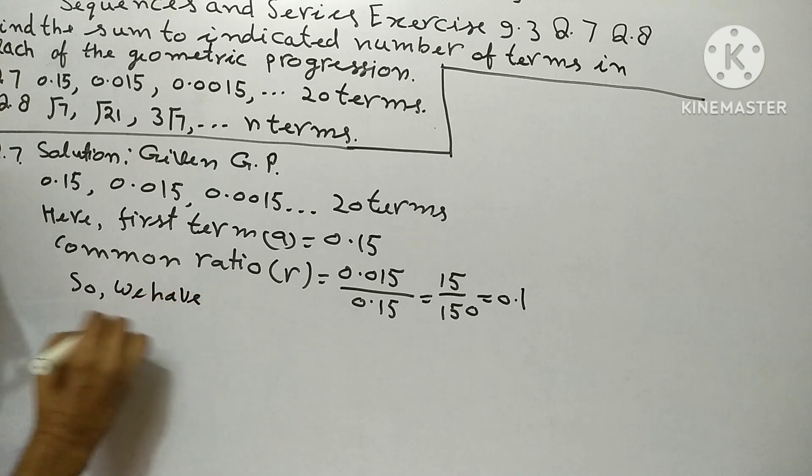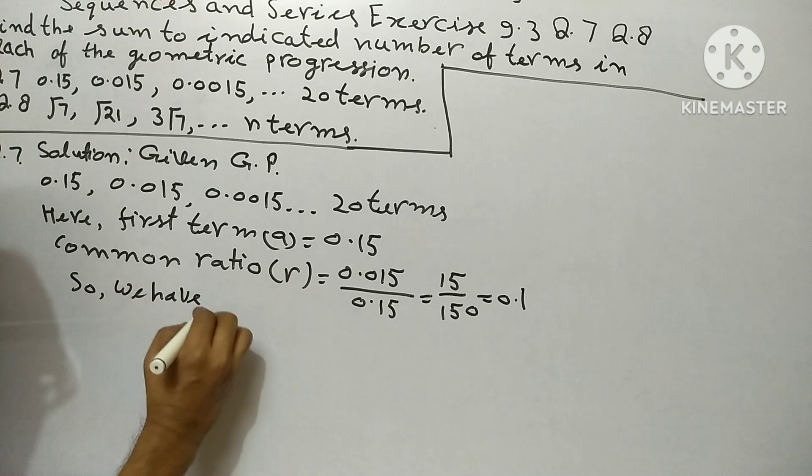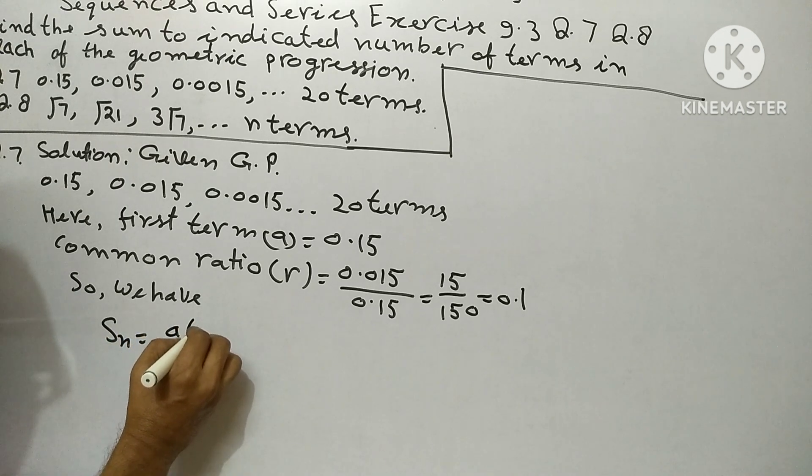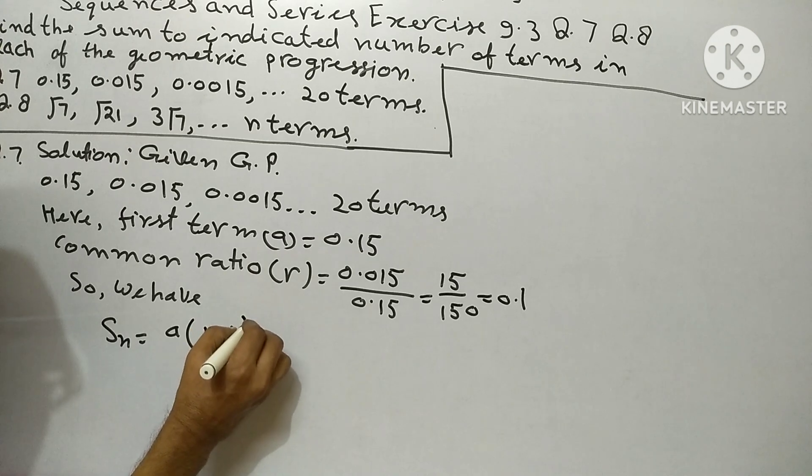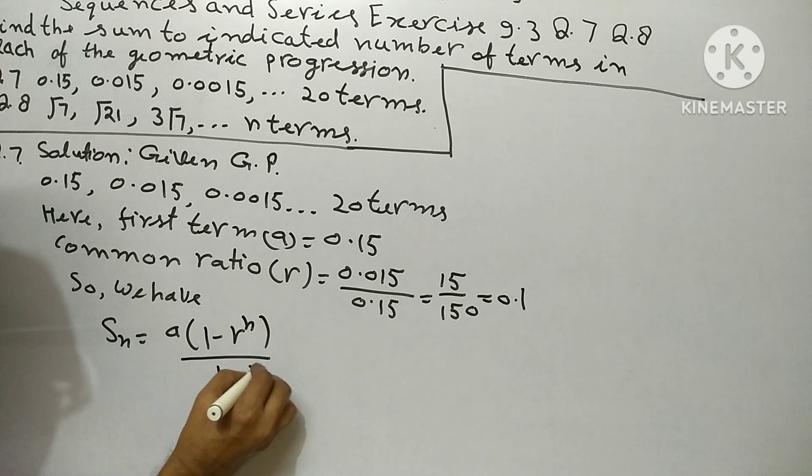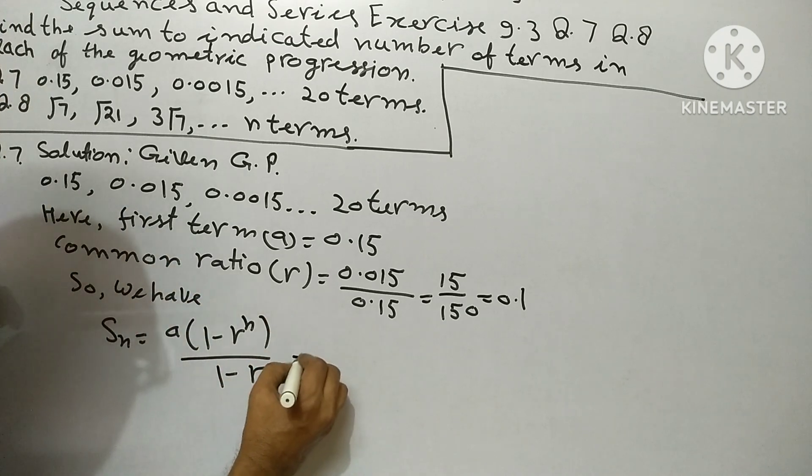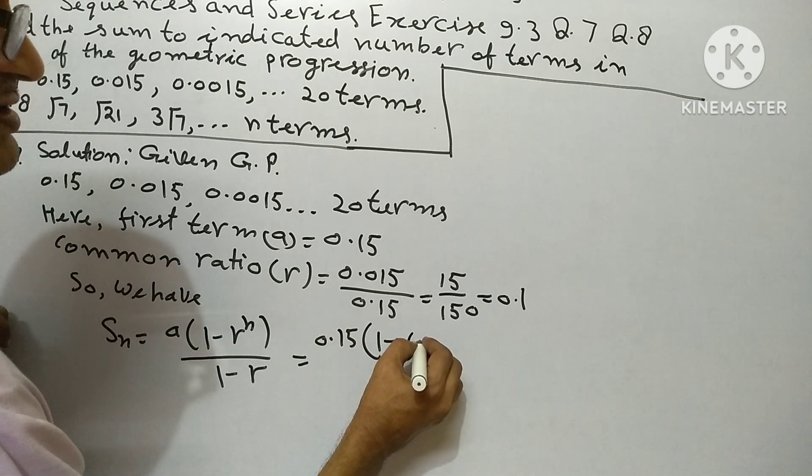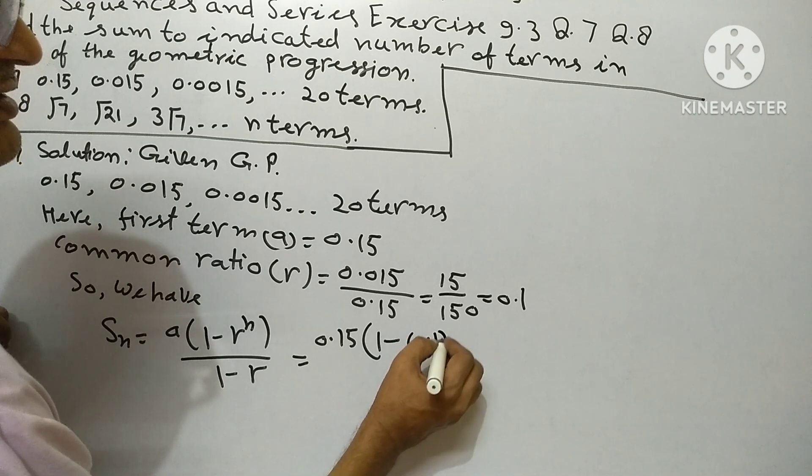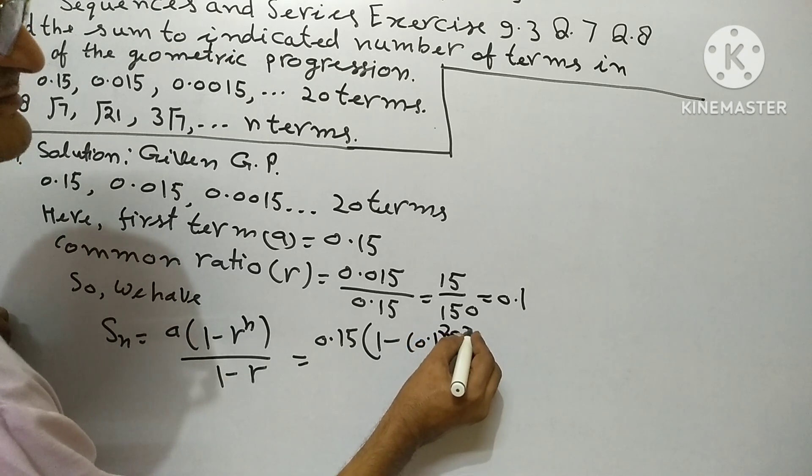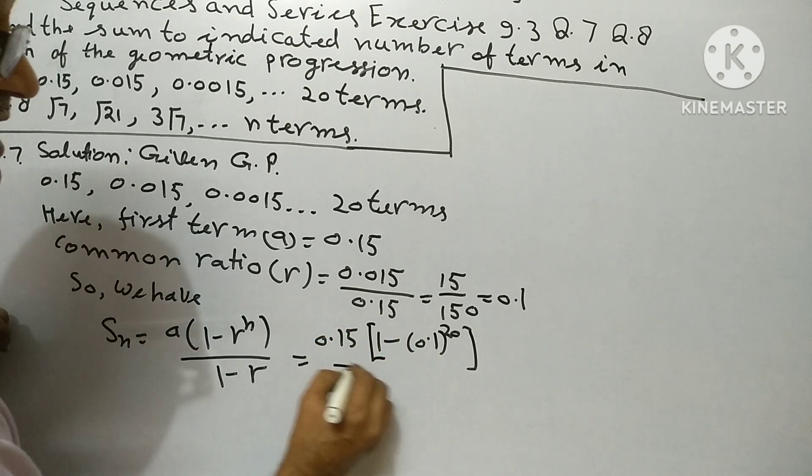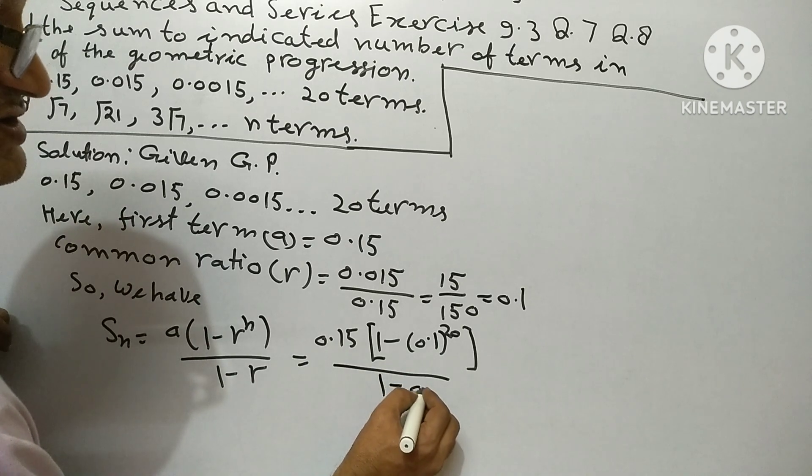So we have SN equals A into 1 minus R to the power N upon 1 minus R. Equals 0.15 into 1 minus 0.1 to the power 20 upon 1 minus 0.1.